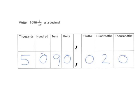Again, we're not going to have to write the final zero, so we just write 5090.02. There'd be nothing wrong if we put the final zero in, it just isn't necessary.